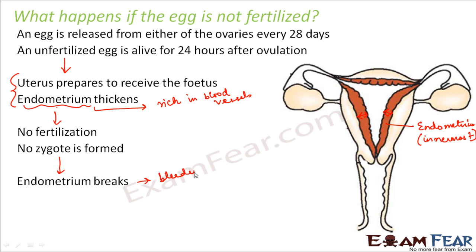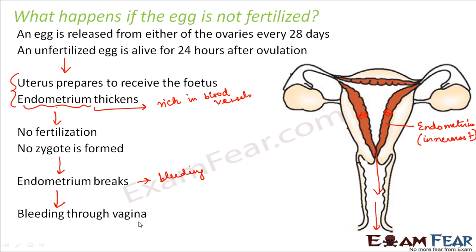When the endometrium breaks, there will be bleeding because it was made up of blood vessels. That blood will flow through the vagina, since the passage is open. So there will be bleeding through the vagina of the female. This is what happens every month to a female, and we call that menstruation.